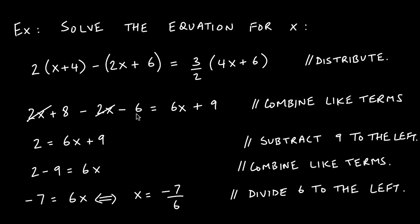Now we combine like terms to reduce what we have. The 2x minus the 2x cancel out, and 8 minus 6 gives us 2. The right-hand side we don't touch right now — we just leave it as 6x + 9.